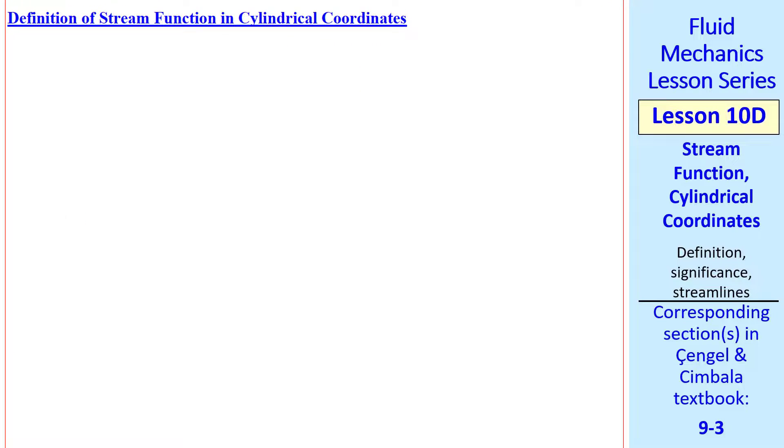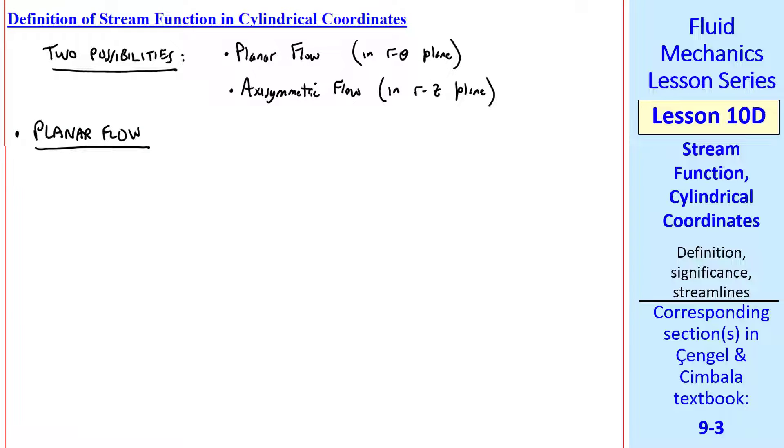First, the definition. There are actually two possibilities. Planar flow, which is flow in the R-theta plane, and axisymmetric flow in the R-Z plane. Let's talk about planar flow first.